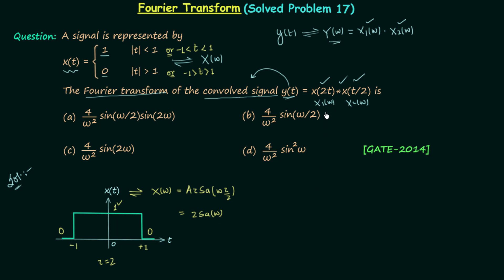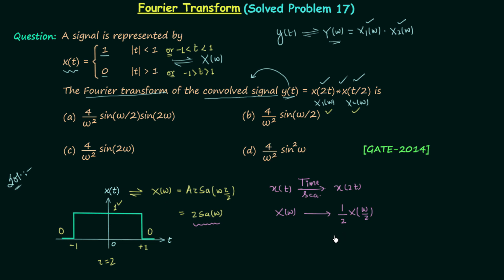Now we calculate X1(ω) and X2(ω). Signal x(2t) is obtained from x(t) by time scaling by a factor of 2. X(ω) is the Fourier transform of x(t), so after time scaling by 2, the Fourier transform becomes (1/2)·X(ω/2). Since X(ω) = 2·sinc(ω), we get X1(ω) = (1/2)·2·sinc(ω/2) = sinc(ω/2).